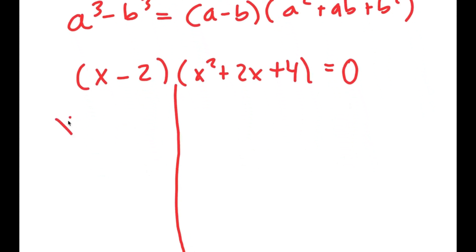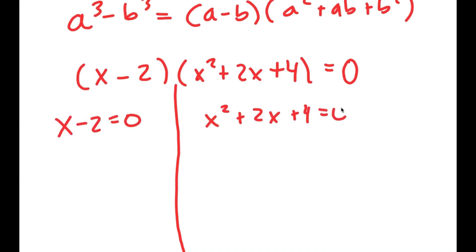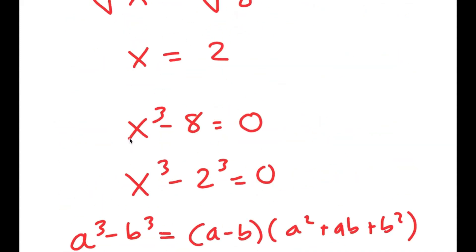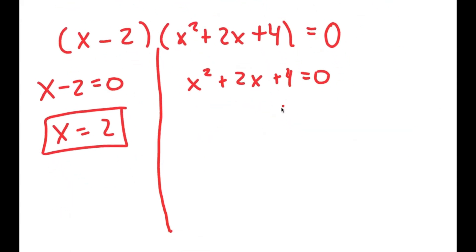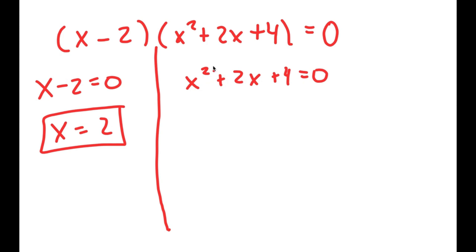So now I get two equations: x minus 2 equals 0, and x squared plus 2x plus 4 equals 0. For x minus 2 equals 0, I get x equals 2, which was a solution we already got. But now we have another equation with two more solutions because it's a quadratic equation. So to solve this, I'm going to use the quadratic formula.